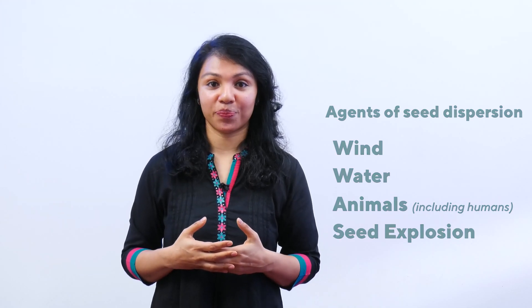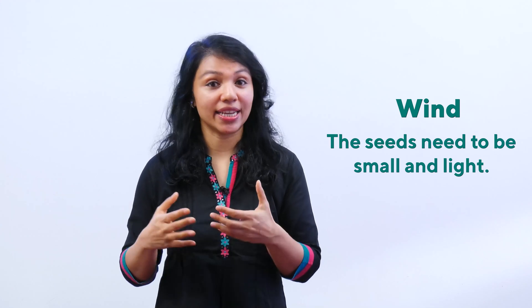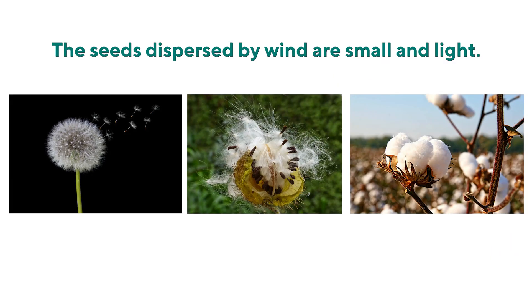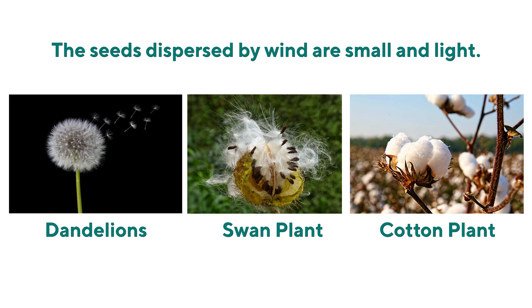Let's look at each of them. Wind: when wind is responsible to disperse the seeds, the seeds have to be small and light. Examples are dandelions or swan plant. These plants have light seeds which can be carried away by the wind and dispersed away from the parent plant. In this case, a lot of seeds will be produced by the plant because the chances of the wind actually dropping the seeds on the soil so that it can grow into a new plant are not very great. So the seeds are very large in number.